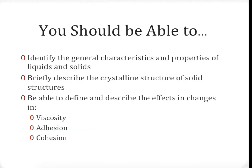That brings us to the end of our video. At this point you should be able to identify the general characteristics and properties of liquids and solids, briefly describe the crystalline structure of solids, identify what a unit cell is and how it translates into the shape of the overall structure, and discuss the liquid properties we covered — namely viscosity, adhesion, and cohesion. Most of this information is very factual and serves as a nice foundation to allow better conversations about liquids and solids later on in the unit.